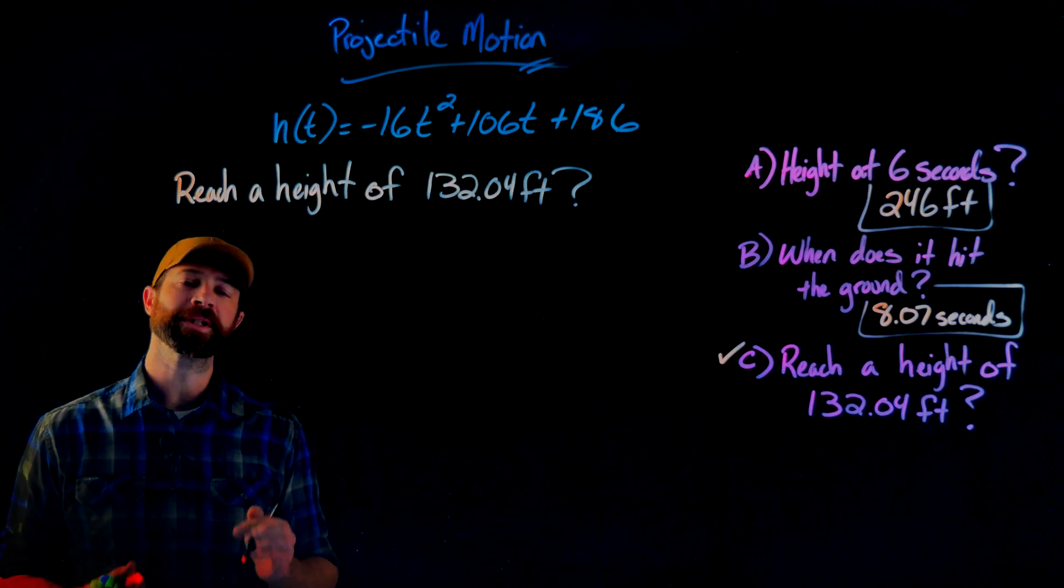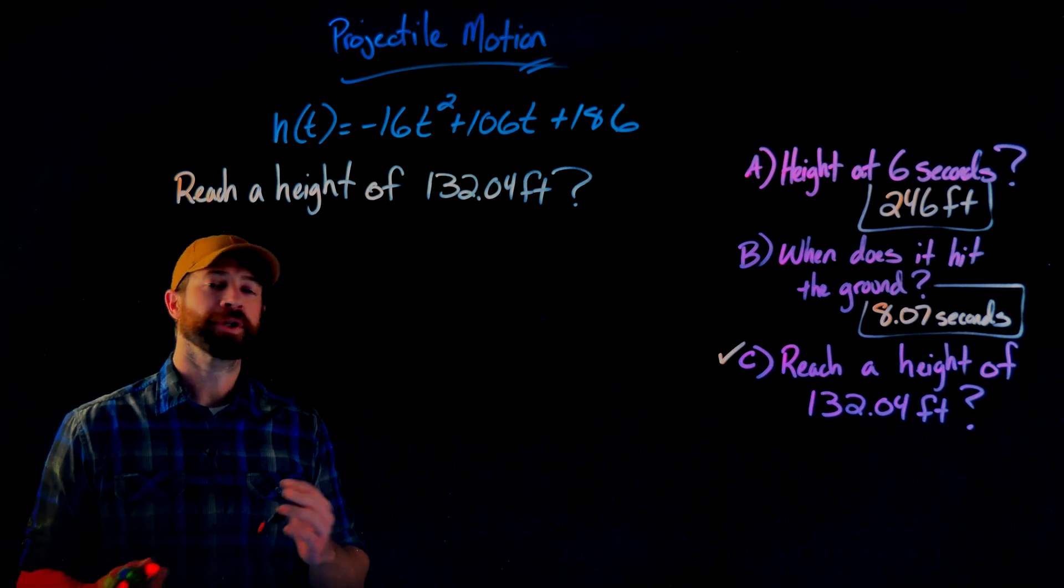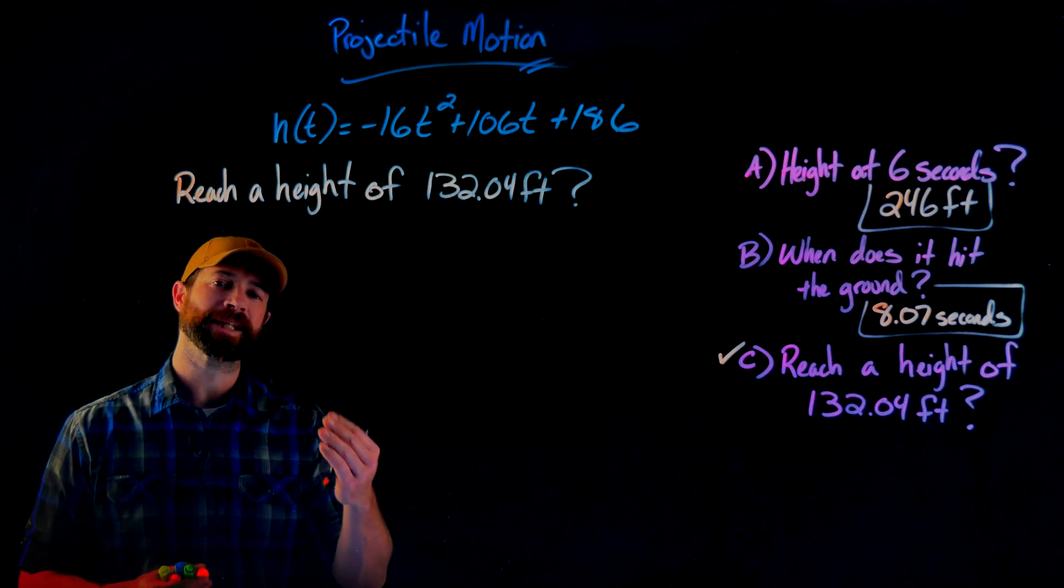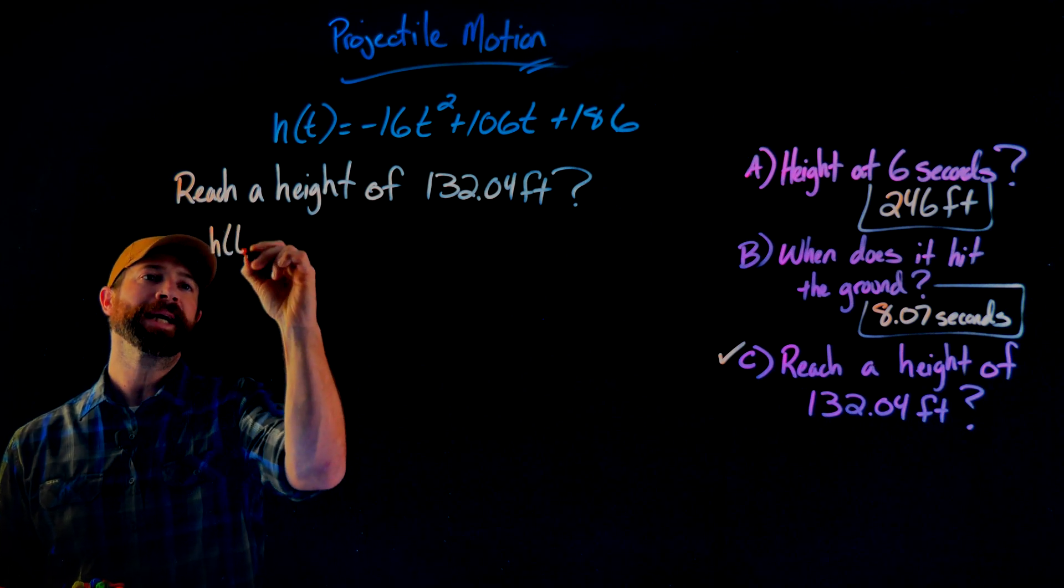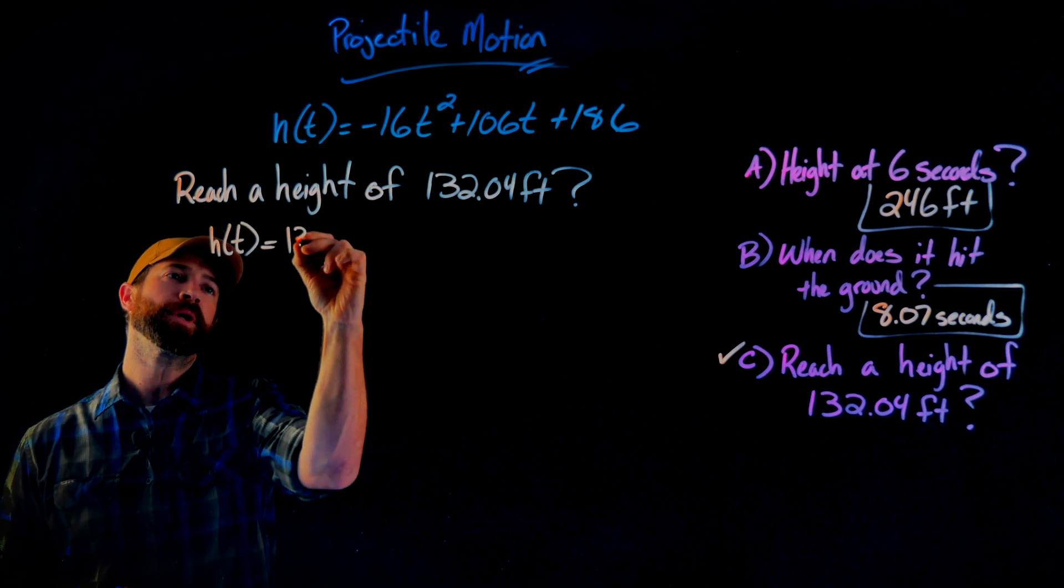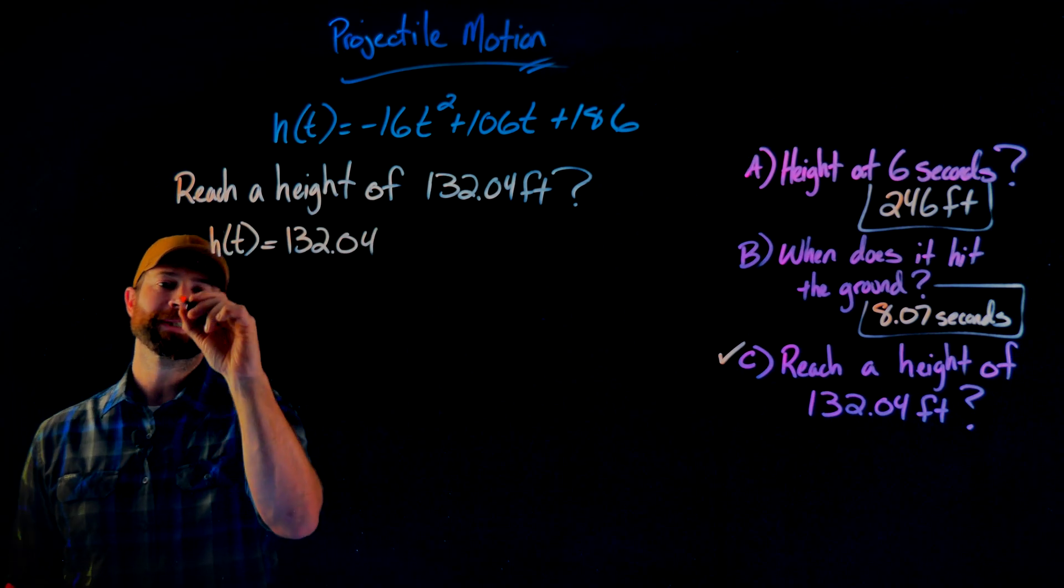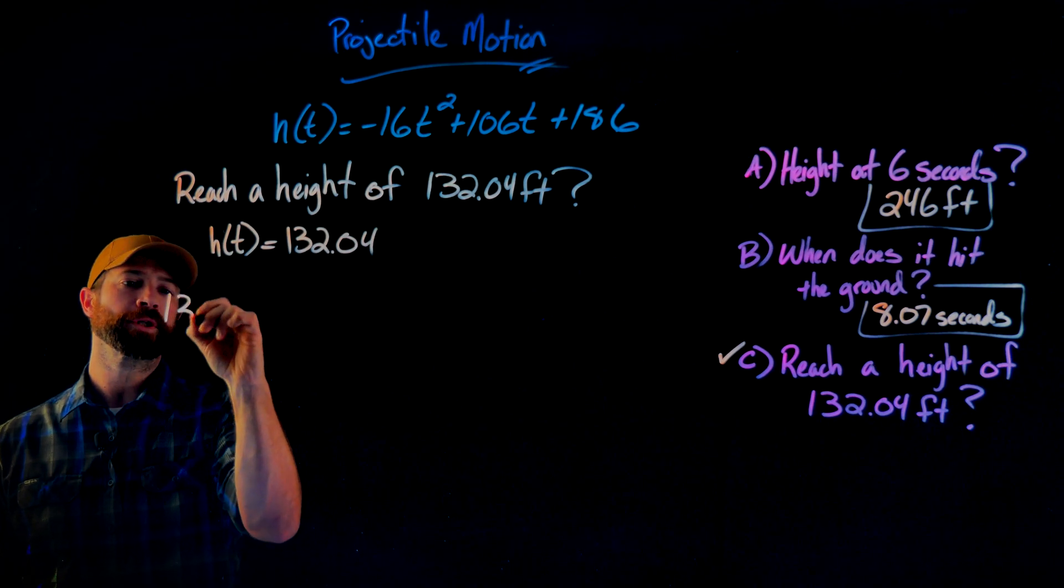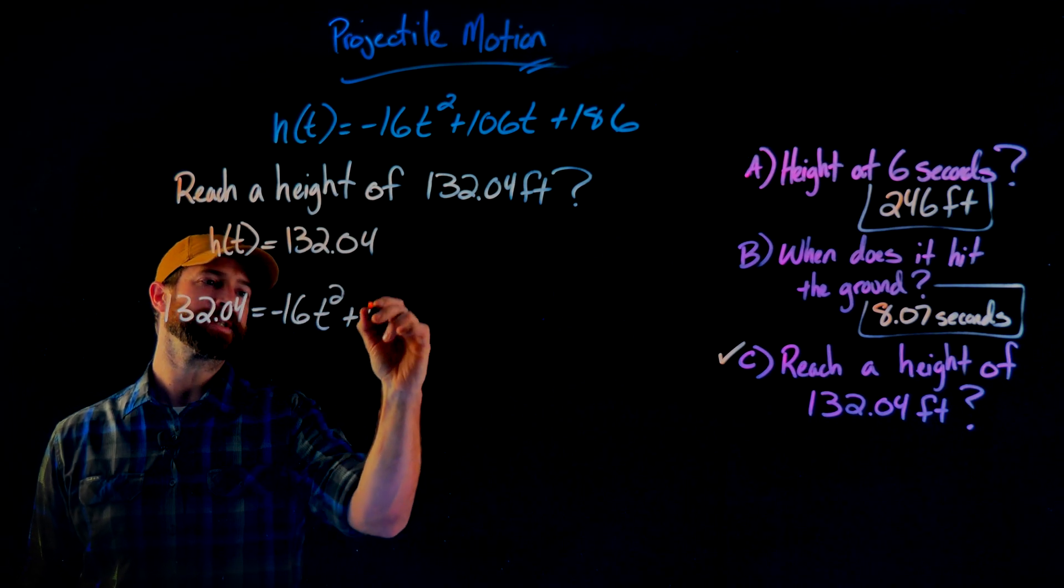Our final question is when our object reaches a height of 132.04 feet. To solve this, it's very similar to the last step except instead of finding out when the height is zero, we want to know when the height of this object is equal to 132.04. So we set our function equal to 132.04.